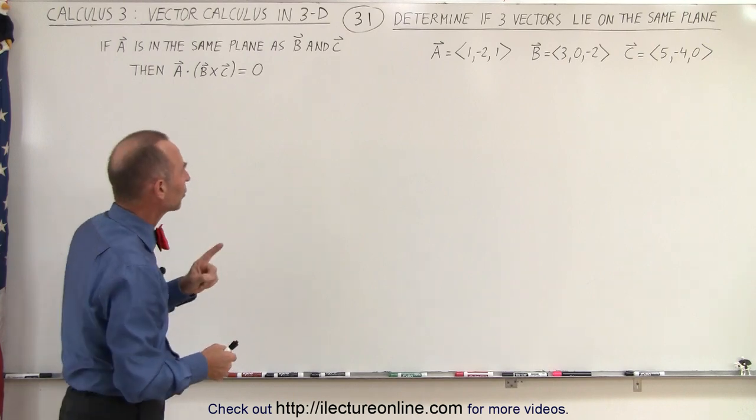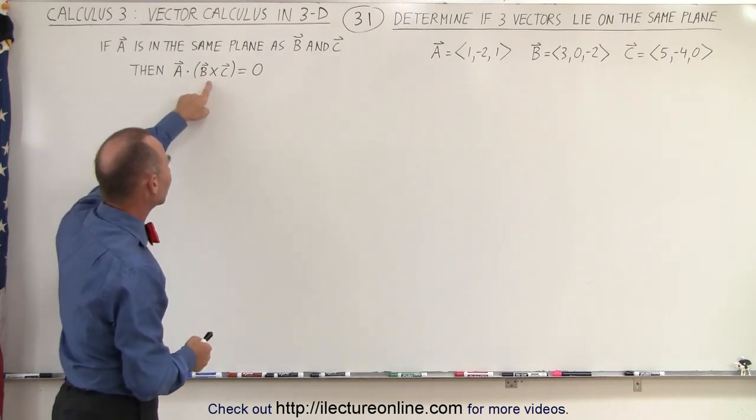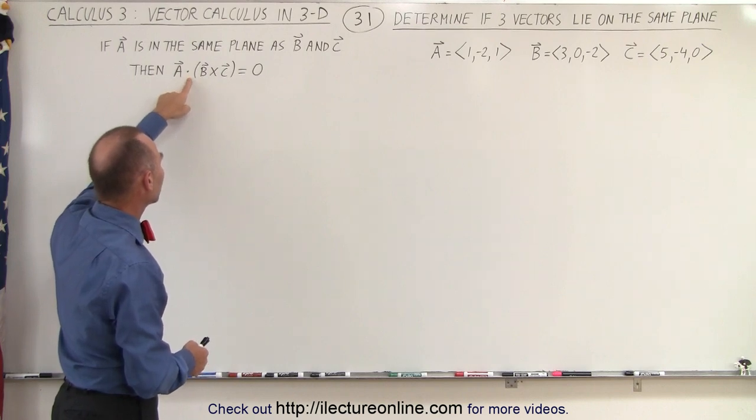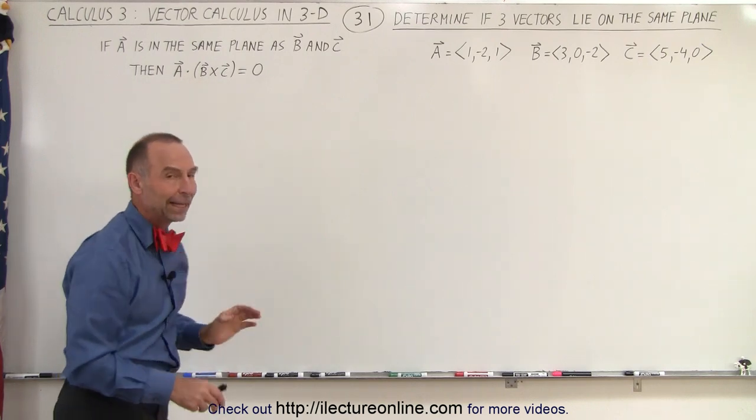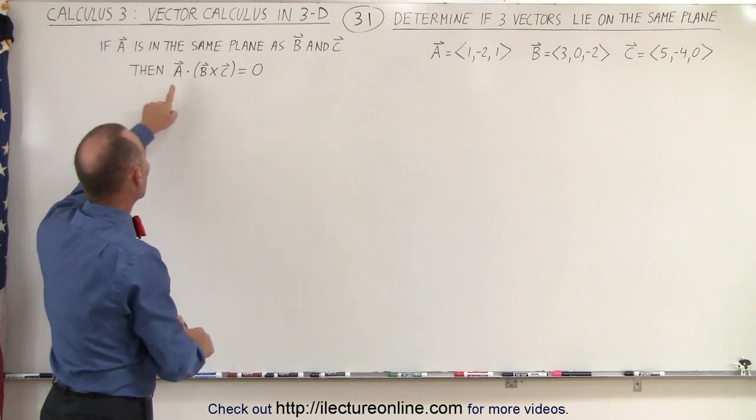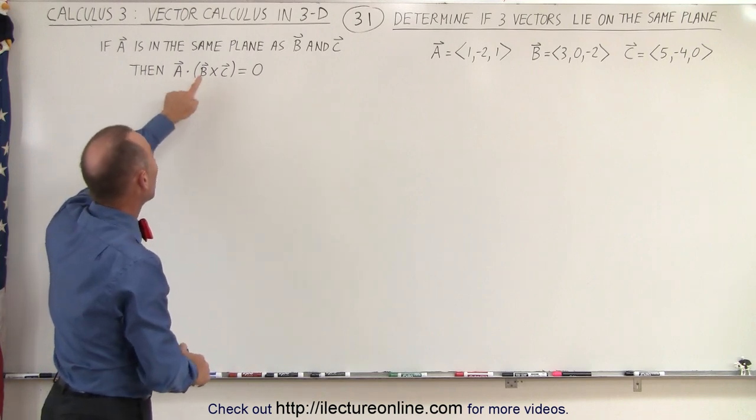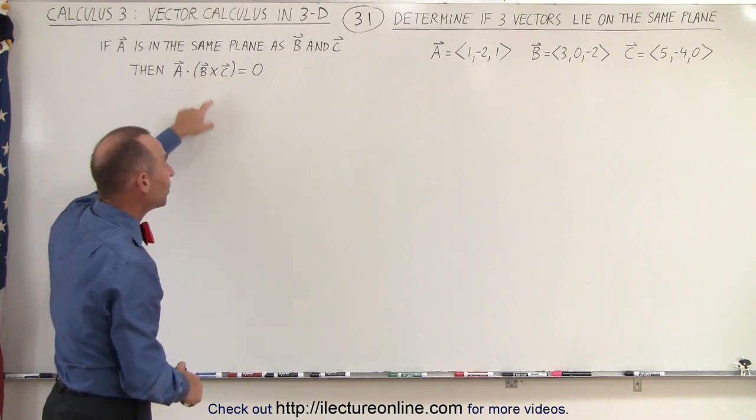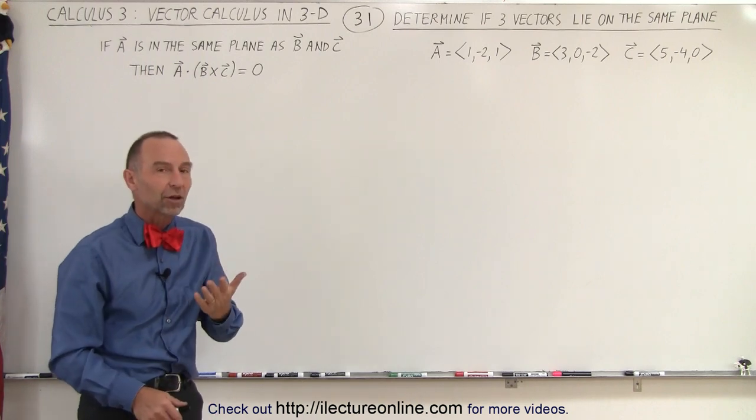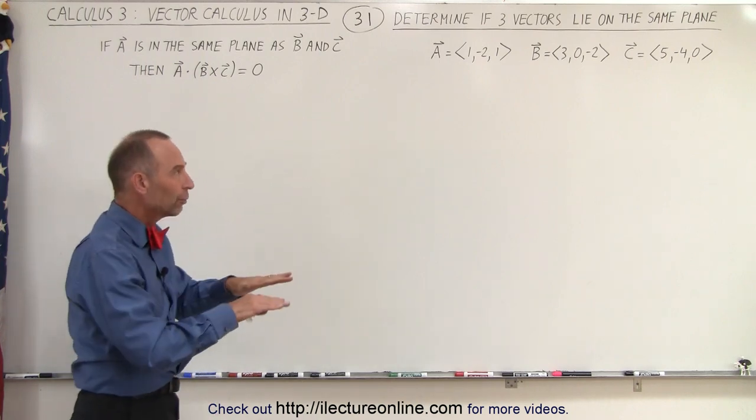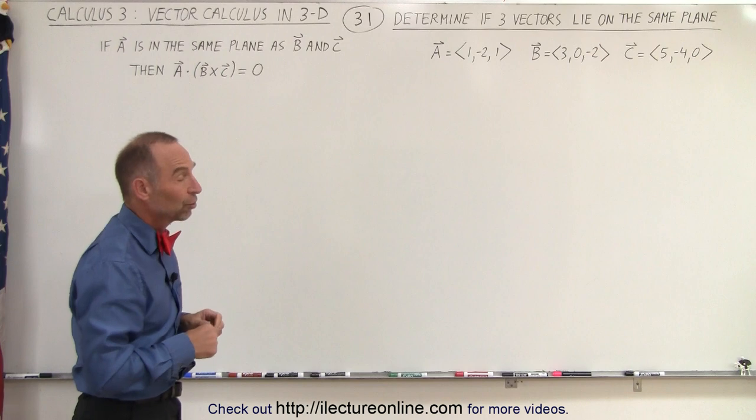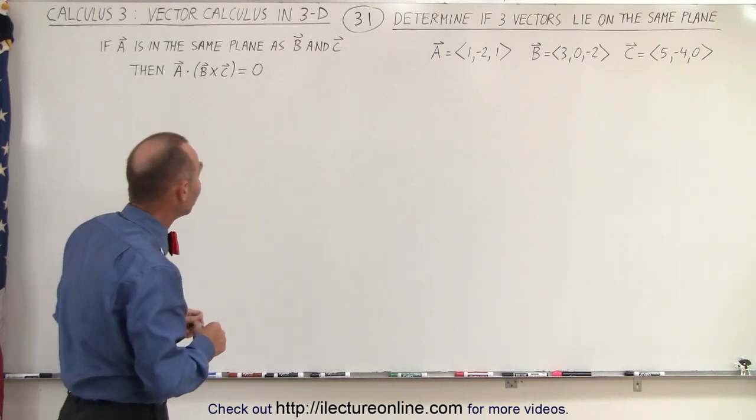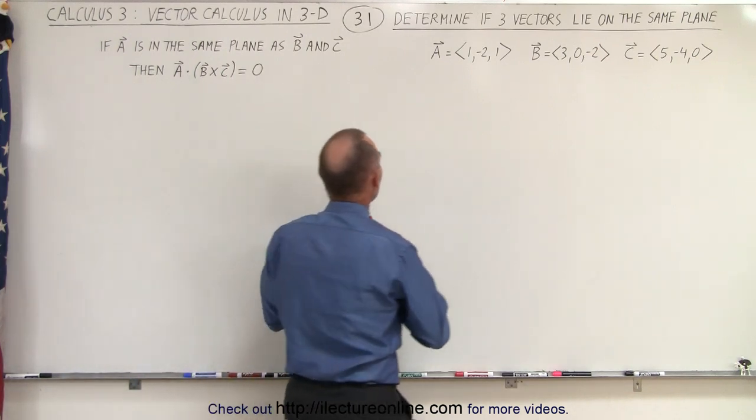That means we're first going to take the cross product of B and C and dot it with A. And again, it doesn't matter what the order is. You could go A cross B dot it with C or A cross C dot it with B. All that will give you the same result. You'll get zero if all three vectors lie on the same plane.